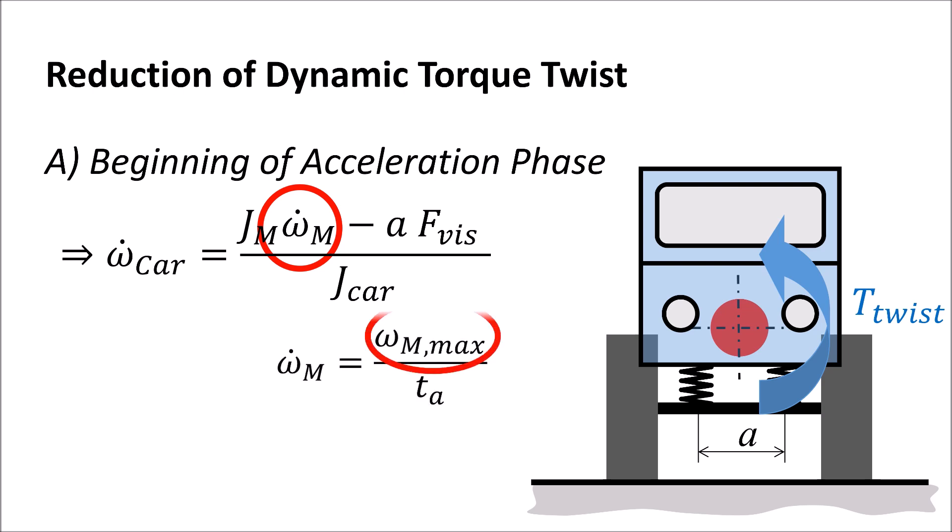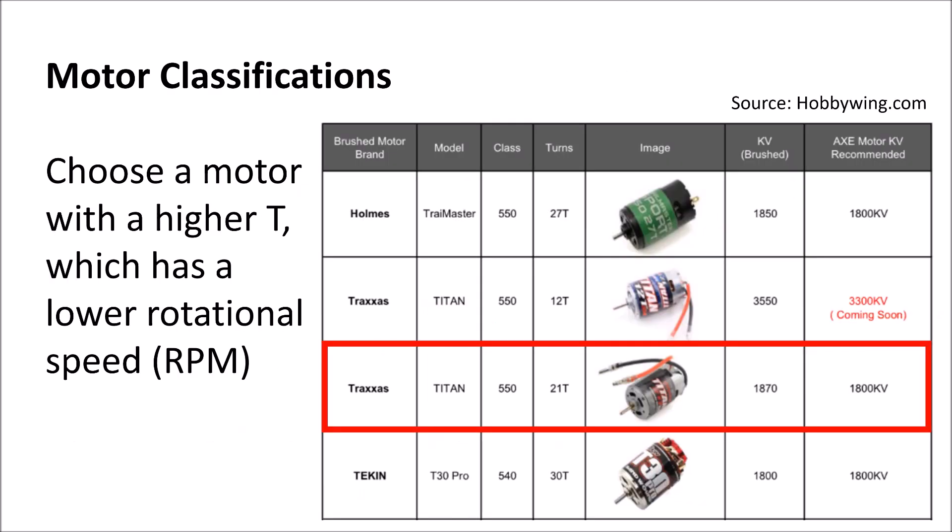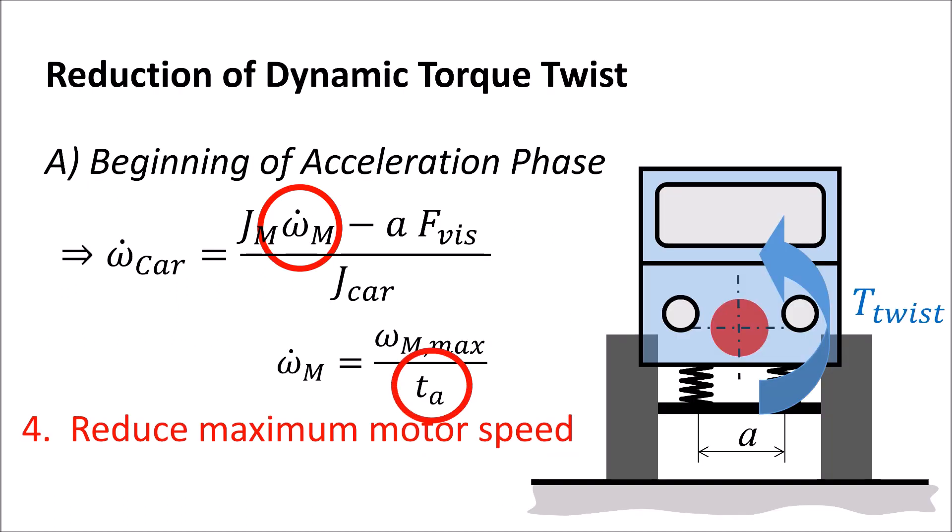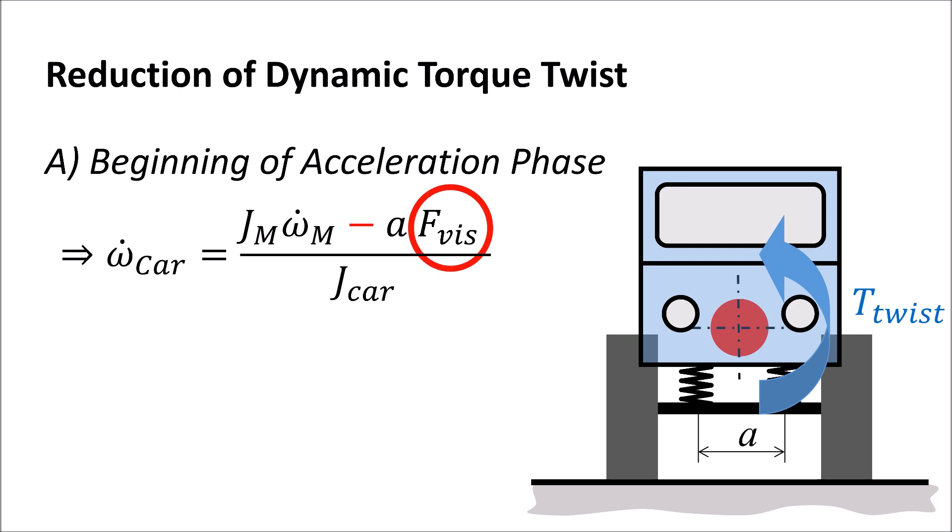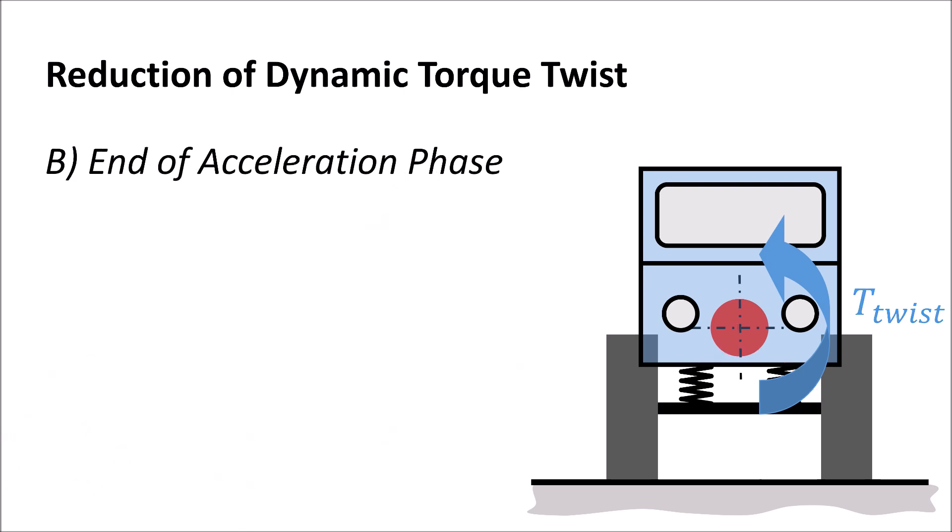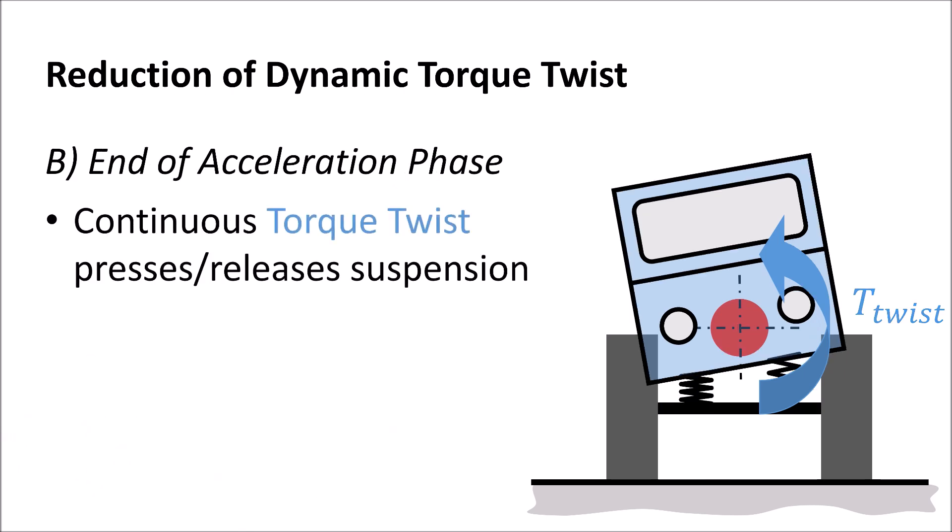Fourth, by reducing the maximum motor speed. For example, by choosing a motor with a higher number of turns. Or fifth, by increasing the acceleration time. Sixth, by a damper oil with a higher viscosity. And seventh, by increasing the lateral distance between the dampers.